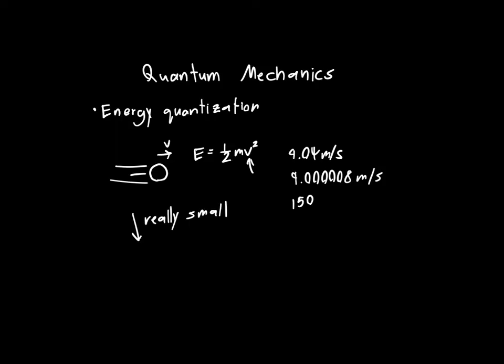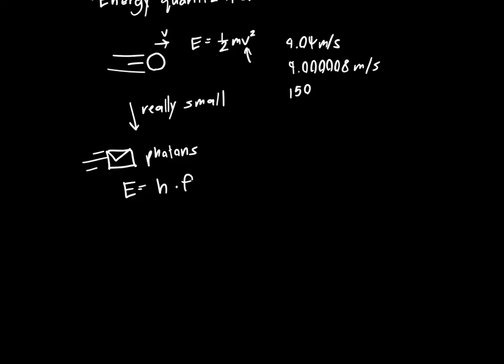We're only allowed to exchange energy in individual packets called photons. And the energy of this individual packet is just h, which is Planck's constant, times the frequency of the photon f. And it turns out that this is a general formula for the energy of any particle in quantum mechanics. So the energy of a particle is described this way.